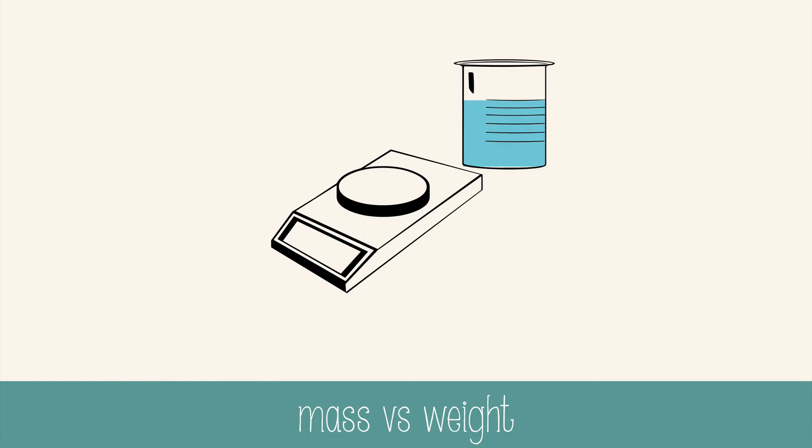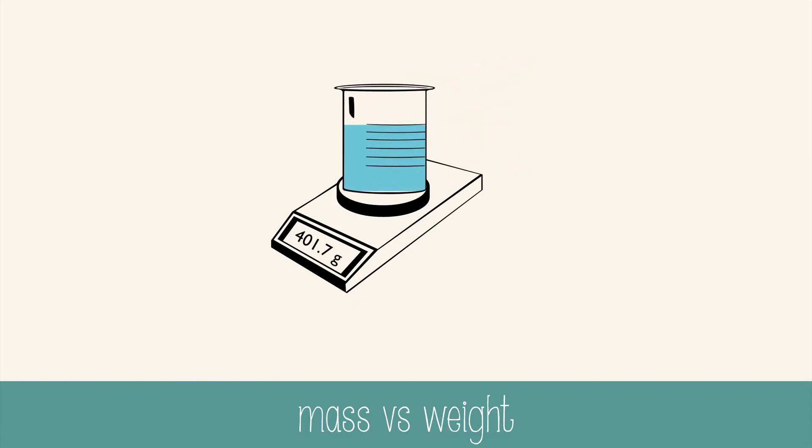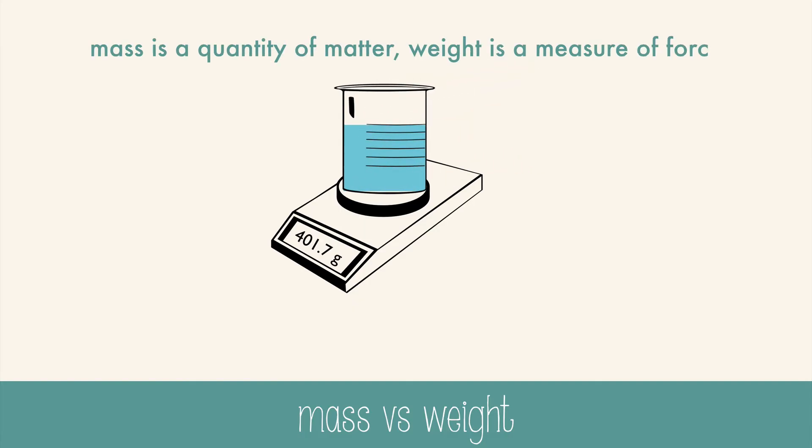We use a scale or a balance to measure mass on Earth, which is different from weight. Weight is a measure of force, like the pull of Earth's gravity, and mass is a quantity of matter. Mass won't change no matter what planet you're on, but weight will.